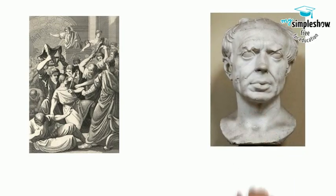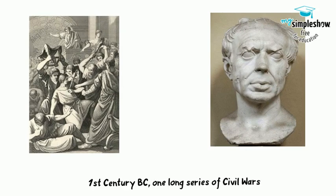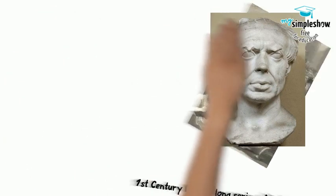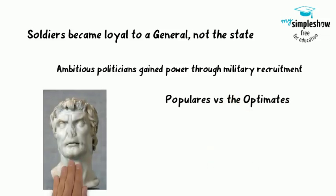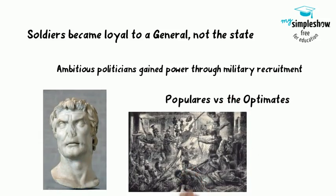For instance, the Gracchi brothers spoke out, and one ended up committing suicide and the other was murdered. A general and former consul named Marius created an army of the poor by promising land if they'd help seize the government. This action moved the loyalty of soldiers from the state to any politician who could promise them a better future in the factions of the populares or the optimates. Roman citizens suffered as politicians began to recruit soldiers to help them gain control. A consul named Sulla rose up and then wiped out Marius' regime and his followers.